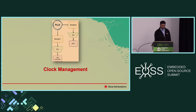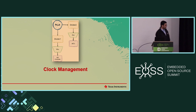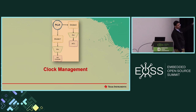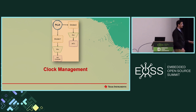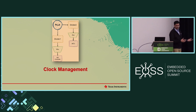Here's a basic clock management overview. What we have is a PLL, which is sort of a source clock. That same PLL goes further into a divider and then into a multiplexer, and then finally to the peripheral. So as you can see, there is a complex clock tree that you need to configure just to get the right frequency to your peripheral.